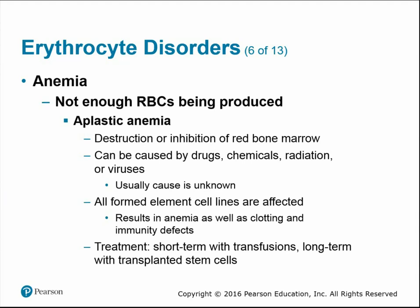Aplastic anemia involves destruction or inhibition of the red bone marrow, and can be caused by drugs, chemicals, radiation, or viruses — for example, when bone marrow or immune function is suppressed after a transplant. Because all blood cells form in the red bone marrow, this affects all formed elements, resulting in anemia as well as clotting and immune defects — loss of platelets, white blood cells, and red blood cells. Short-term treatment is transfusions; long-term treatment requires stem cell transplantation.